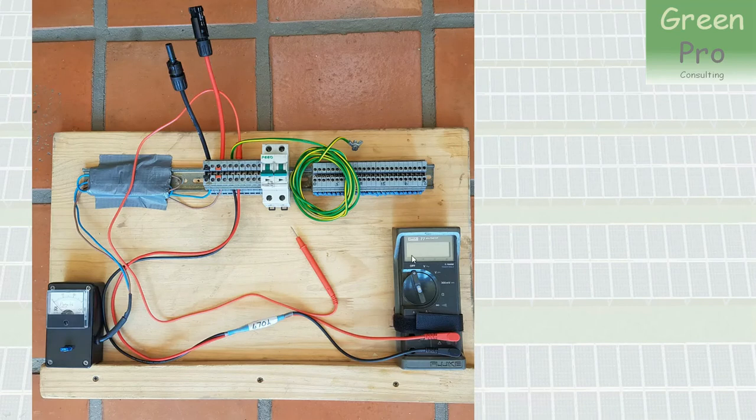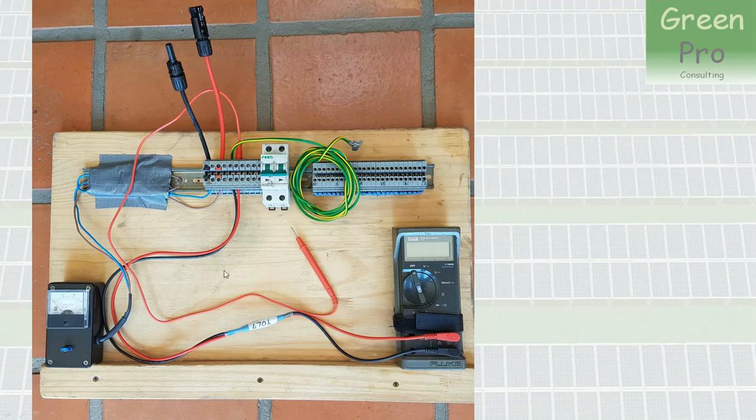Before we do that, let's just look at a test panel which I made for myself. It's simply a board with connectors on, and there you can connect the MC4 connectors coming from the string. It just makes it a bit safer and easier to do the connections. I've cut off the little pieces of plastic that prevent you from pulling it out again, because this is a test arrangement and you want to connect and disconnect all the time.